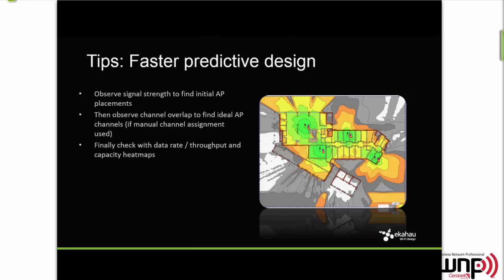When you're actually doing the predictive design and placing access points, first look at the signal strength — whether that's sufficient to meet your needs, like -67 dBm for voice or -72 to -75 dBm for data, whatever your coverage requirements are. Then start drilling down on channel overlap. Many want to leave automatic RF on and let it do channeling automatically — nothing wrong with that — or you can manually design the channel plan using RF predictive tools. After the fact, look at the channel overlap heat maps to figure out how much harmful overlap you have — how much CCI, how much ACI.